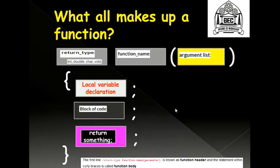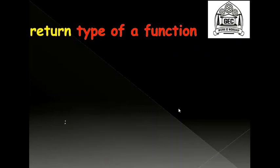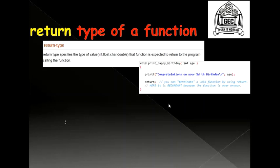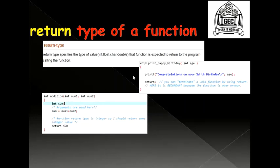Let's throw more light on what we mean by return type of a function. Here we have a small piece of code. The return type here is void. When you have void as the return type, you need not return anything — even if you eliminate or don't use the return statement, your code will run exactly fine. So when you have void, you need not put a return statement; even if you put it, it's not a problem.